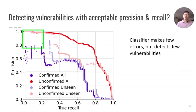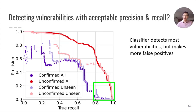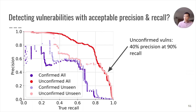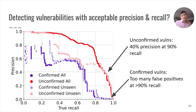The top left is an area where the classifier makes very few errors — it's very precise, but because of this, it captures very few vulnerabilities. The bottom right is an area where the classifier detects most vulnerabilities, but in doing so makes more errors and has more false positives. We tune for higher recall, since taint tracking is able to correct these false positives in our system. When predicting unconfirmed vulnerabilities, our model is able to produce 40% precision at 90% recall. Unfortunately, when predicting confirmed vulnerabilities directly, there are far too many false positives at 90% recall or higher for these models to be used effectively.